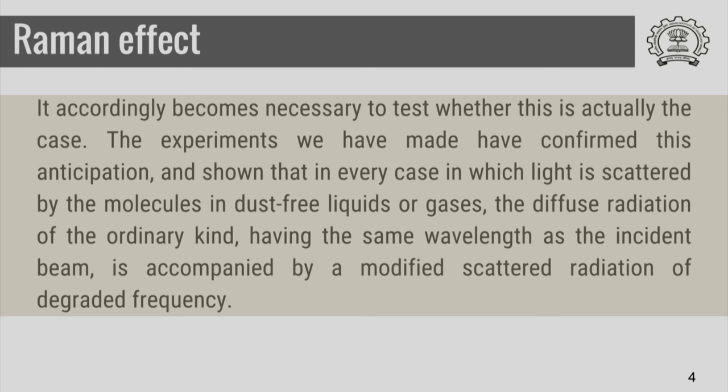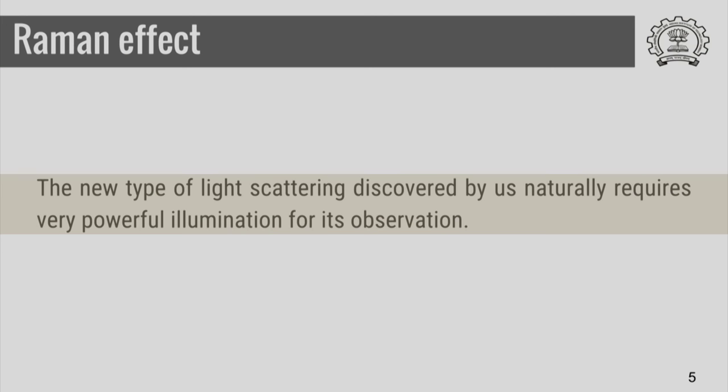Then the results are announced: 'The experiments we have made have confirmed this anticipation and shown that in every case in which light is scattered by the molecules in dust-free liquids or gases, the diffuse radiation of the ordinary kind having the same wavelength as the incident beam is accompanied by a modified scattered radiation of degraded frequency.' The first sentence set the general area and idea, the second said what they are going to test, and the third summarizes the experiments and results. Then the next paragraph starts, saying that the new type of light scattering discovered by us naturally requires a very powerful illumination for its observation.